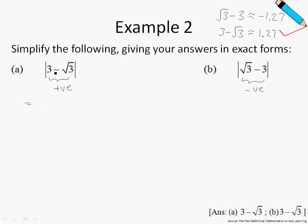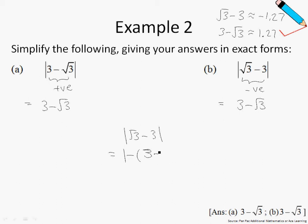In the first expression, when I remove the modulus sign, I'm just left with the original expression. Whereas in the second expression, since the value inside is negative, the modulus sign converts it to a positive number, which is just 3 minus root 3. For those who can't see clearly: the expression inside is negative — it can be written as negative 3 minus root 3 — and the modulus sign removes the negative sign, leaving you with 3 minus root 3.